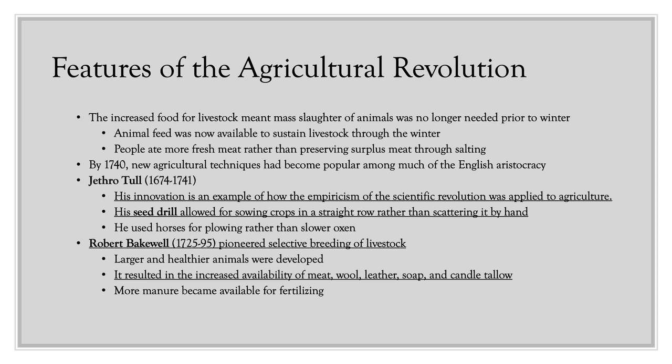The increased food for livestock meant that mass slaughter of animals before winter was no longer needed. Previously, villages would slaughter most livestock because there wasn't enough food to sustain them through winter. Now, these new crops provided animal feed to sustain livestock through winter, so people could eat more fresh meat rather than salted preserved meat, which improved health and longevity. By 1740, these new agricultural techniques had become quite popular among much of the English aristocracy.